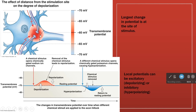Another thing to note: not all neurotransmitters are stimulatory. Some neurotransmitters don't cause depolarization — they cause hyperpolarization. Based on what we talked about, what ion channel would cause hyperpolarization? Potassium.